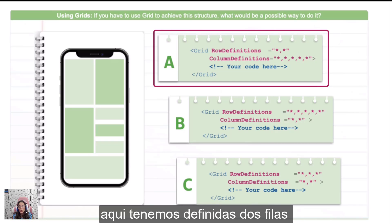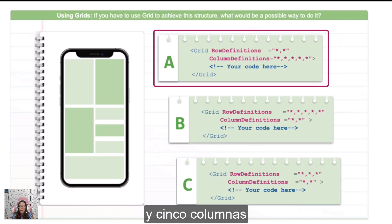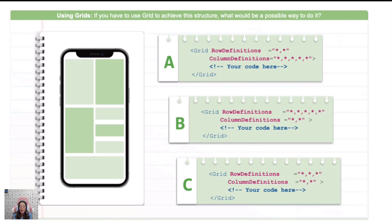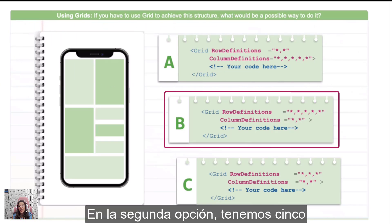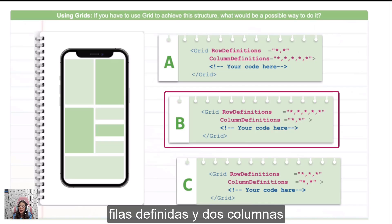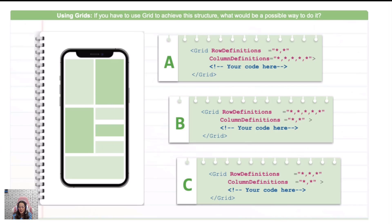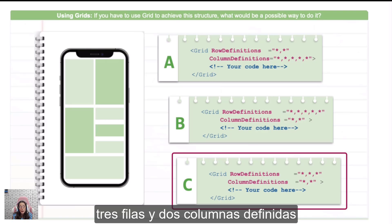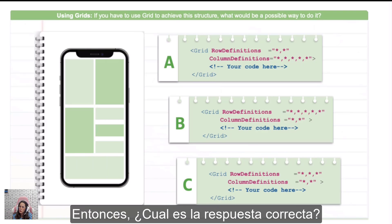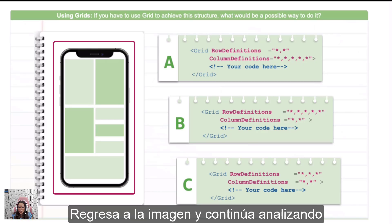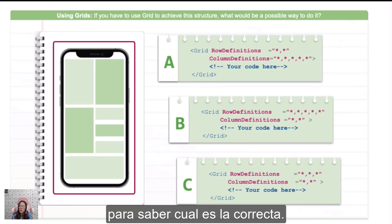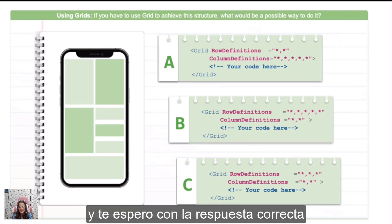Here we have two rows defined and five columns defined. For the second one, we have five rows defined and two columns defined. And for the last one, we have three rows defined and two columns defined. So what is the right answer here? Return to the image and continue analyzing to know which is the right one. Take some minutes and I will be waiting for you — return with the right answer.